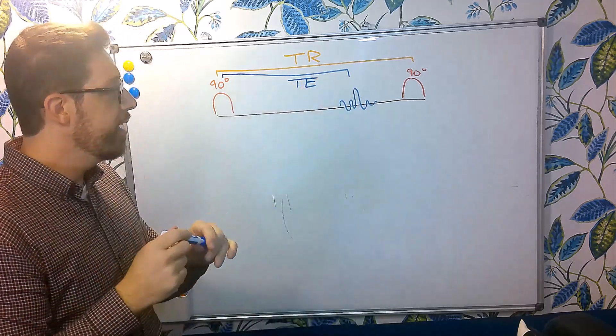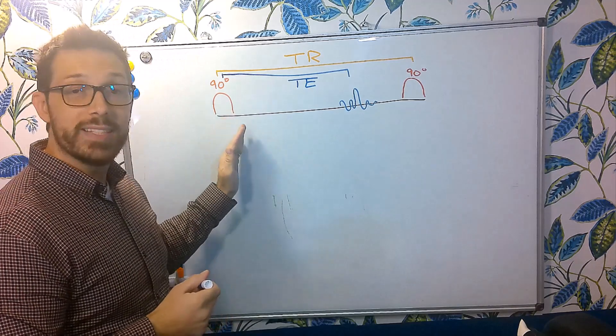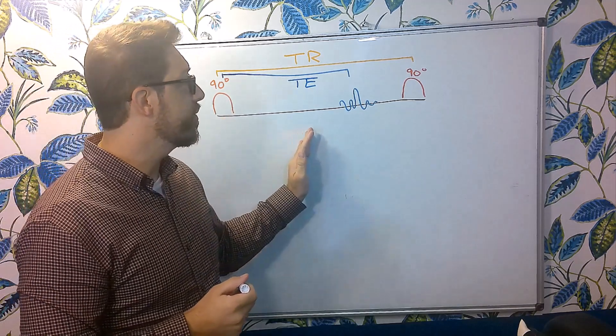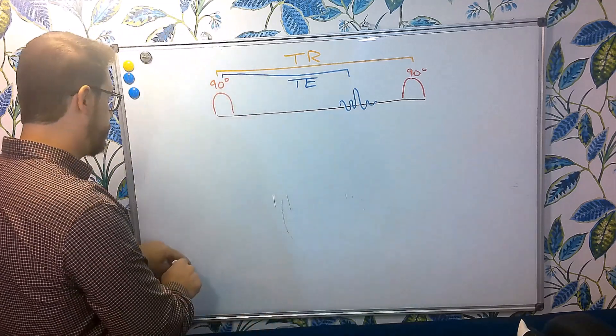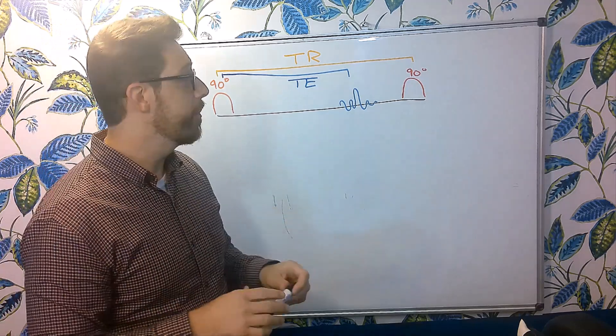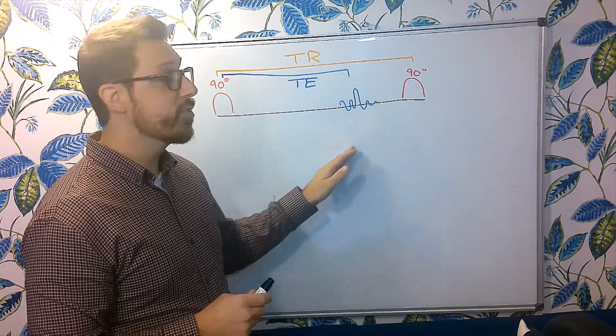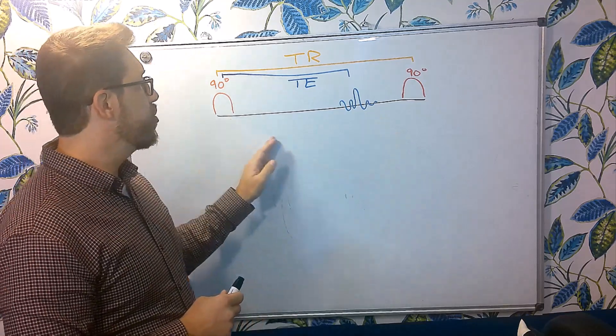So our TE is within this TR time. So I excite my patient, I wait a duration of time, collect an echo, and then repeat this process over and over again. I'm repeating or there's a repetition time and there's an echo I'm collecting. So there's an echo time from excitation to our echo.